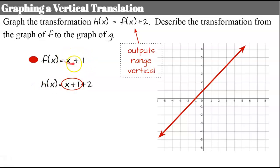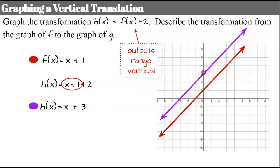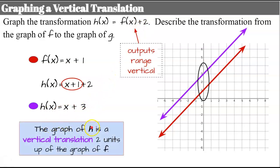We take our function F, X plus 1, and add 2. Writing function H in slope-intercept form by combining like terms gives us 1 plus 2 equals 3. We graph this in purple with a y-intercept of 3 and slope of 1. Since this is happening to our outputs, we can see it shifted up 2 units, as expected. The graph of H is a vertical translation 2 units up of the graph of F.